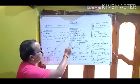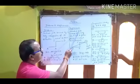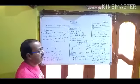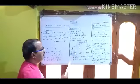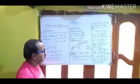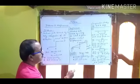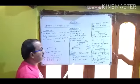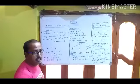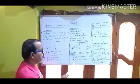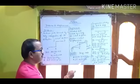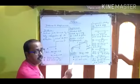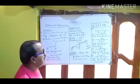So displacement is the shortest distance covered by a body between its initial and final position. Here, displacement is AD. Since displacement deals with direction, it is a vector quantity. Its SI unit is also meter.